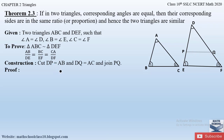Now let us prove the theorem. In triangle ABC and triangle DPQ — which is formed after construction — we can say angle A = angle D, which is already given.